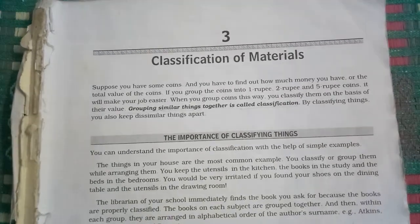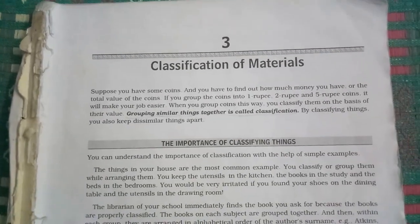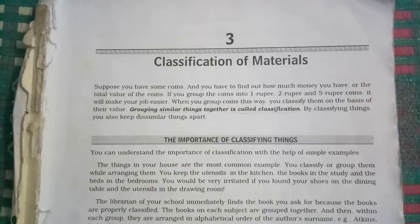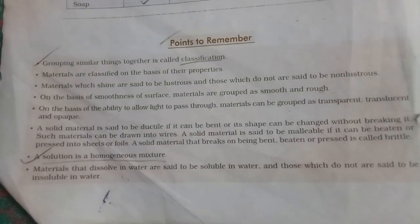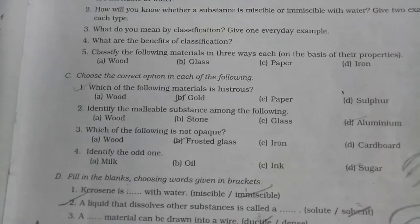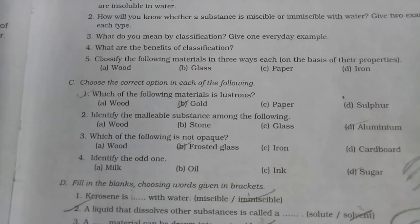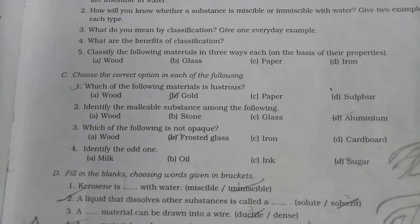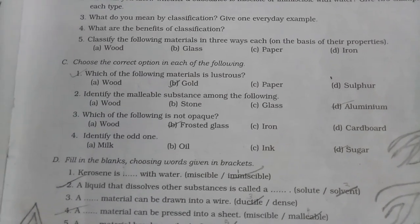Chapter 3: Classification of Materials. Which of the following material has lustre? Gold. Identify the malleable substance among the following: Aluminium.